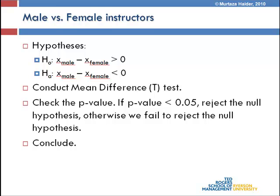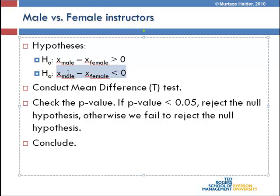Our null hypothesis in this case is that the average teaching evaluation for males is higher than that of females. So the null hypothesis states that males' teaching evaluation is higher than females'. Automatically, the alternative hypothesis becomes that the difference between males and females is less than zero, suggesting that females have a higher teaching evaluation. We conduct the t-test and check the p-value. If the p-value is less than 0.05, we reject the null hypothesis; otherwise we fail to reject it.